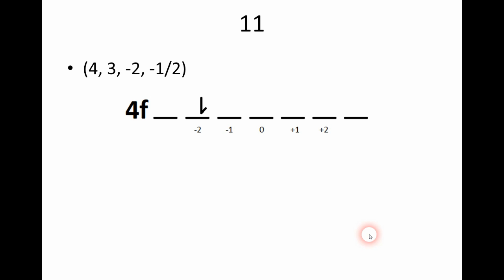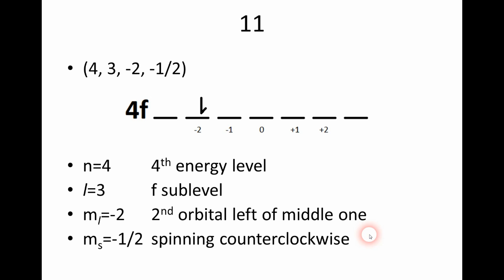Number eleven asks us to explain why the set of quantum numbers is four, three, negative two, and negative one-half for the following electron. N equals four because it's in the fourth energy level. L equals three because it's in the F sublevel. M sub L equals negative two because it's in the second orbital left of the middle one. And M sub S equals negative one-half because the arrow is pointing down, meaning the electron is spinning counterclockwise.